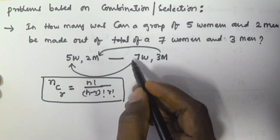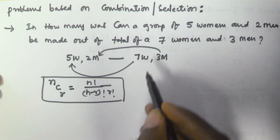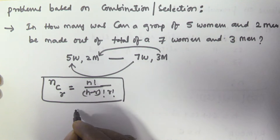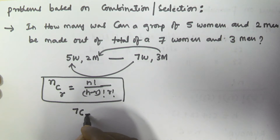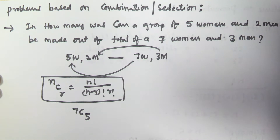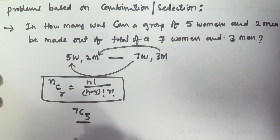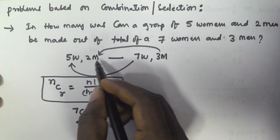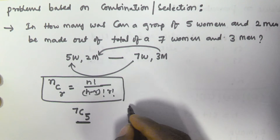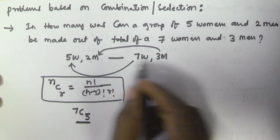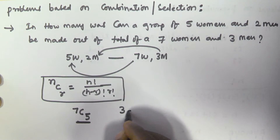In the same manner here, selecting 5 out of 7 can be written as 7C5. This is selecting 5 women out of 7 women. Now we have to select 2 men out of 3 men, which is given by 3C2.